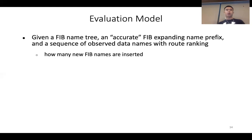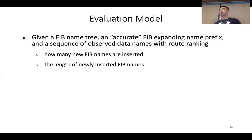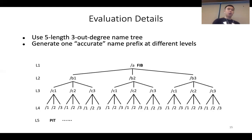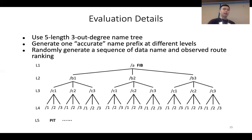A second metric is the length of the newly added FIB names, since longer names may impact lookup performance. In the simulation, we use a five-level, three-out-degree name tree and generate one accurate name prefix at different levels. Under that prefix, traffic has a different route ranking. We randomly generate sequences of data names with observed route rankings in different orders — using 15 different ranking-order sets in the simulation.